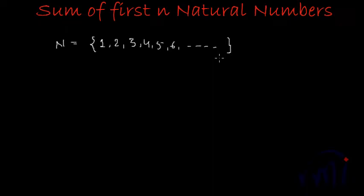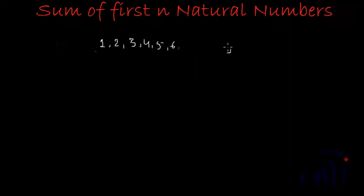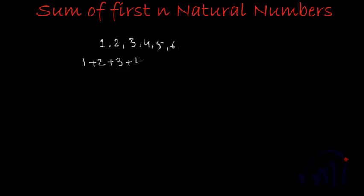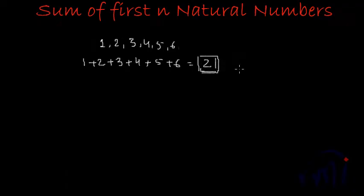Today what we are going to learn is how to find the sum of natural numbers. If I have to find the sum of first 6 natural numbers, these will be the first 6 natural numbers. Since there are only 6 numbers, we can add them manually without using any formula. It will be 1 plus 2 plus 3 plus 4 plus 5 plus 6, which equals 21. So the sum of first 6 natural numbers is 21.